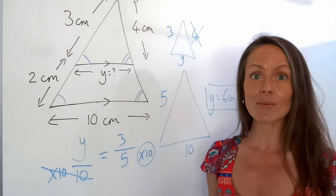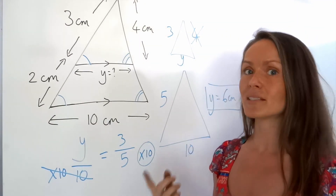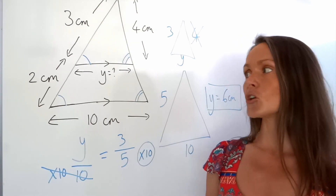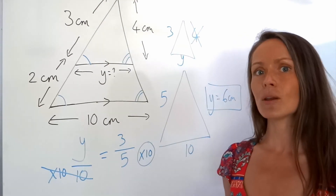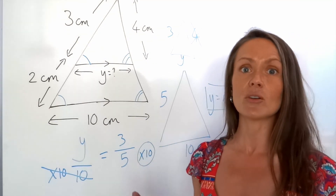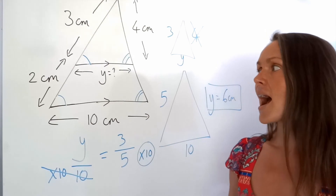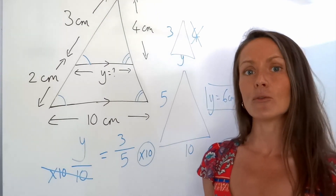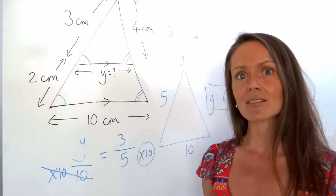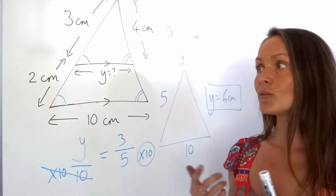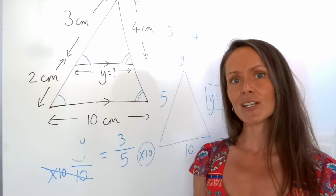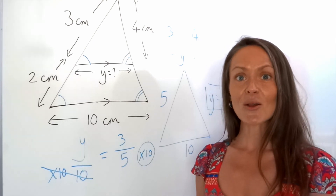So that's similar shapes when you have to find a missing side using sides. There are other questions you might have to do if you're doing extended maths — finding area and volume, or using area and volume to work out unknowns in similar shapes. If you need that for your exam, look out for my other videos which are coming up soon. Goodbye!